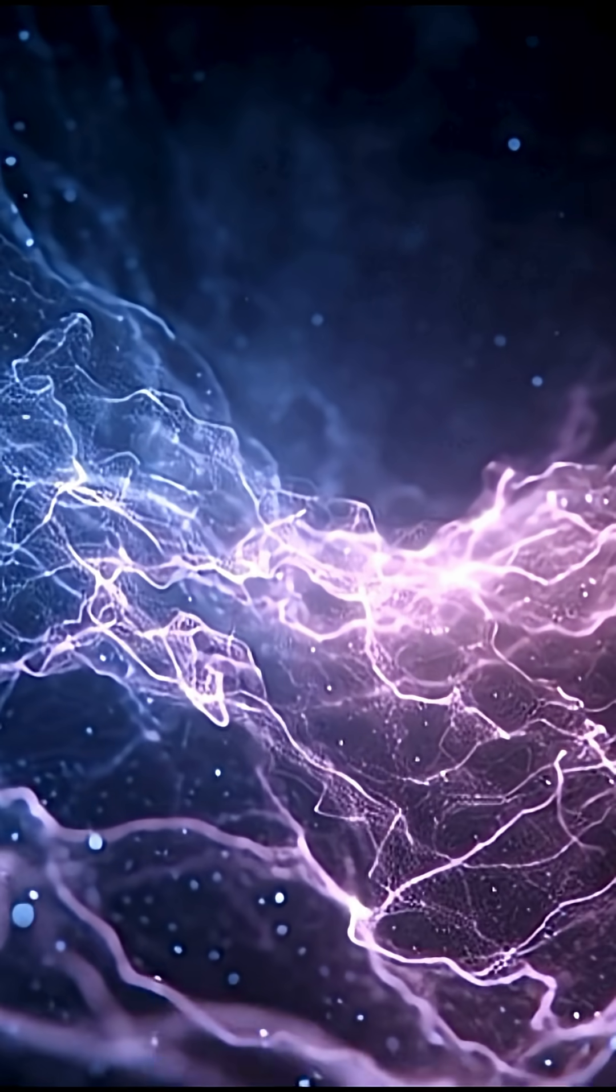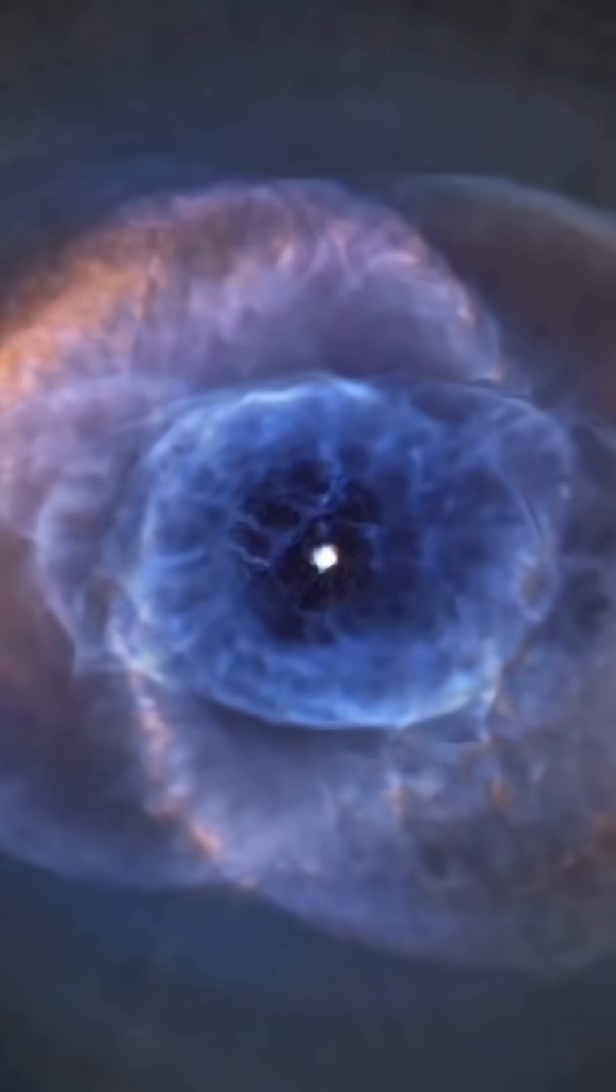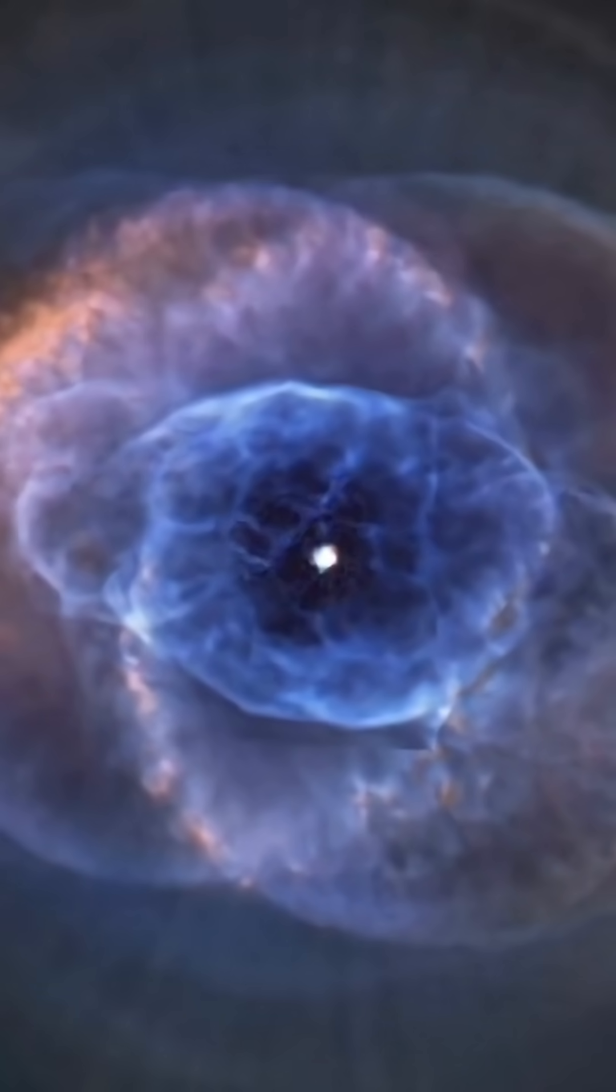But that's not all. Hidden inside the data are thousands of rogue galaxies, ghost clusters, and gravitational distortions bending light like glass.